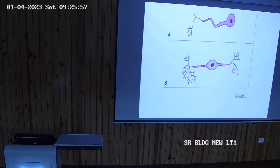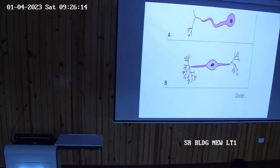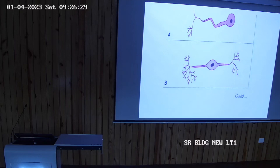Now the various types of neuroglial cells. The neuroglial cells provide nutrition and support to the neurons and are not concerned with conductivity of impulses. In the central nervous system, neuroglial cells are of different types: astrocytes, oligodendrocytes, microglial cells, and ependymal cells.